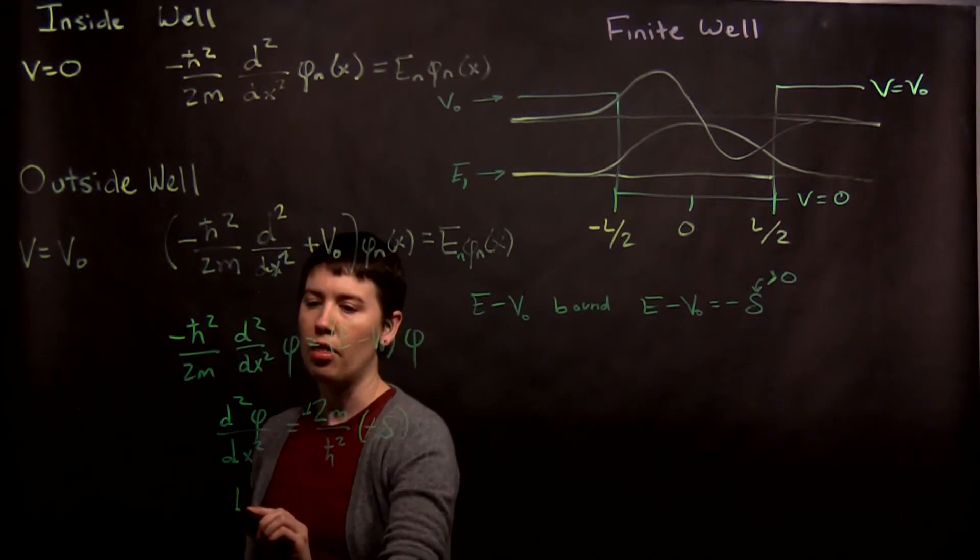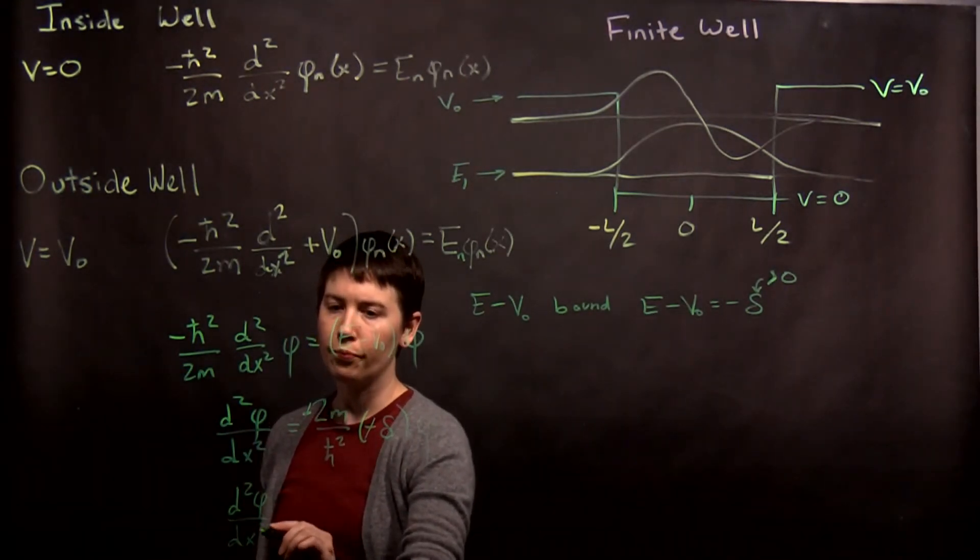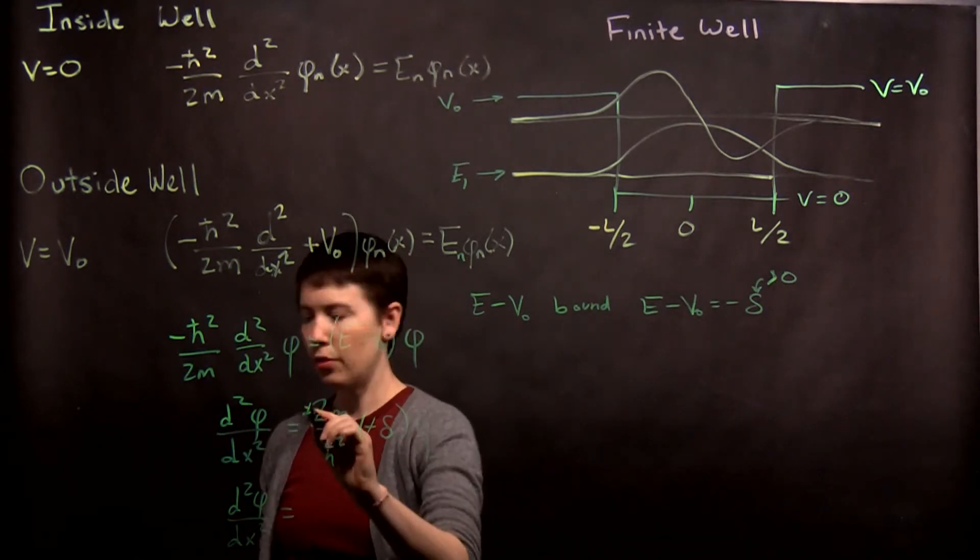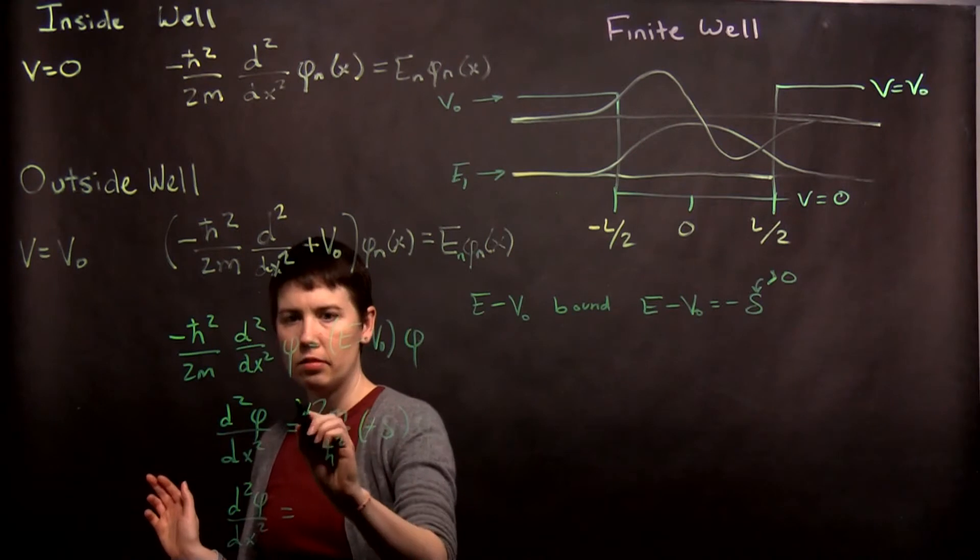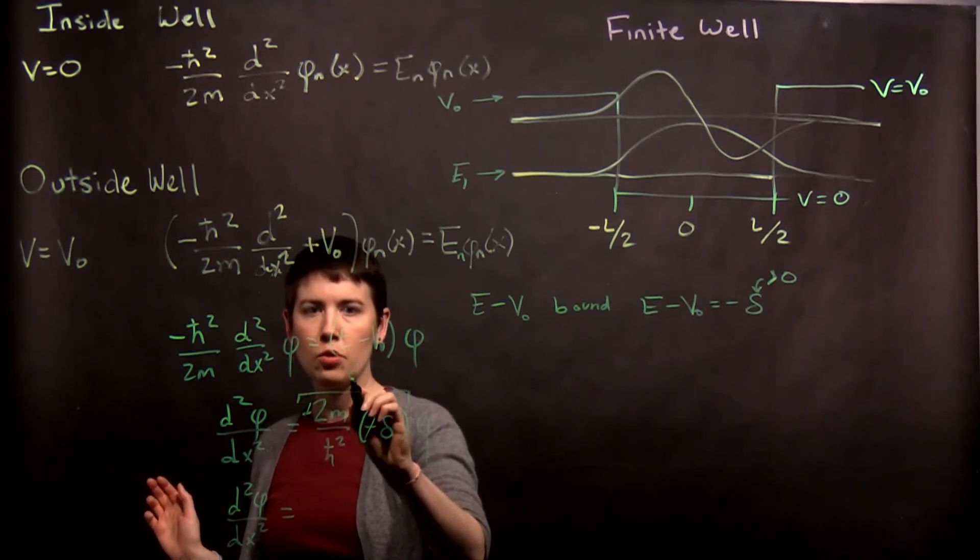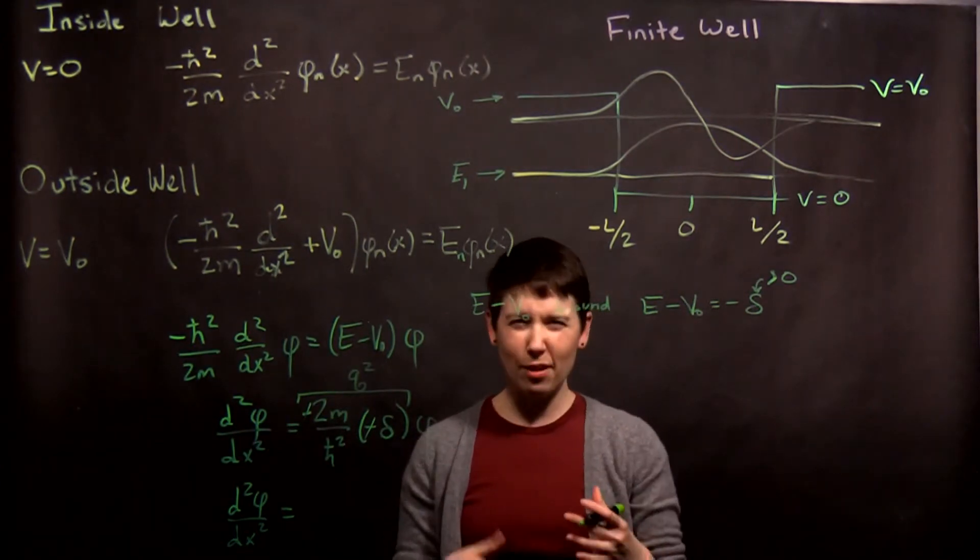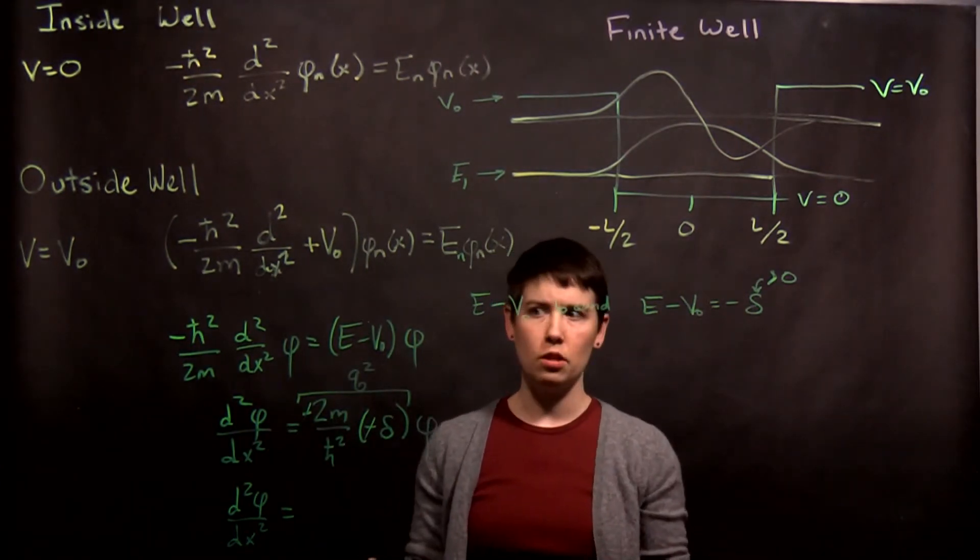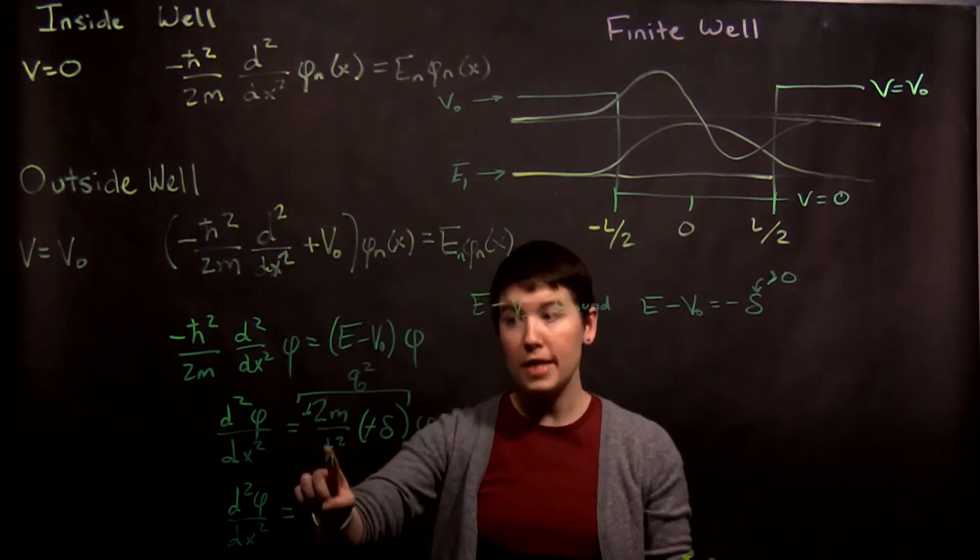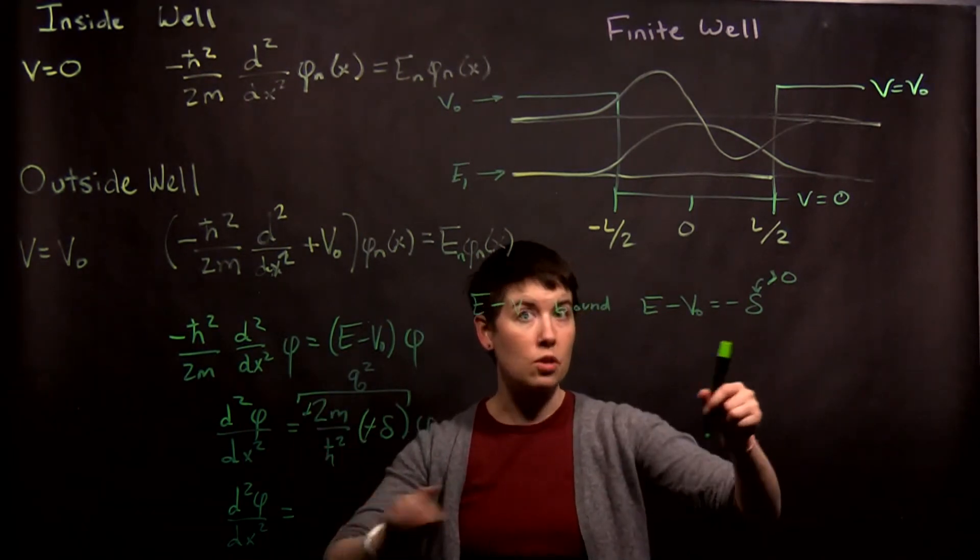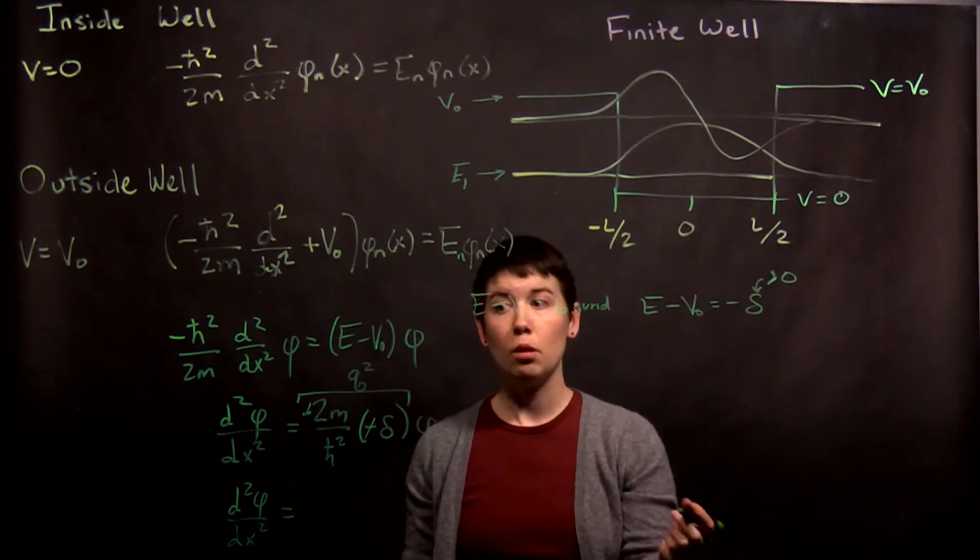So I'm left with my second derivative of my wave function is equal to, and for the sake of simplicity, let's call this q squared. So now, the key is, when I call it q squared, that kind of implies that it's a positive number. And that's going to work, because m is a positive number, h-bar is a positive number, and we've said that delta, for the bound states, which is what we're doing right now, is a positive number.